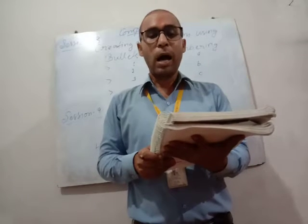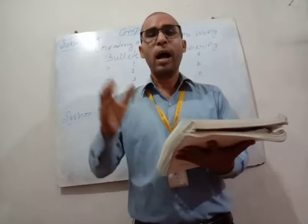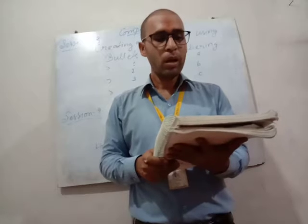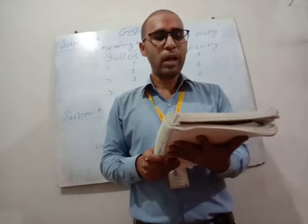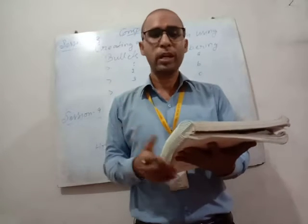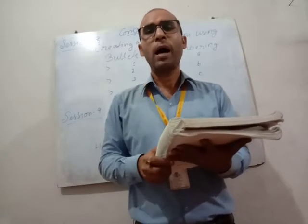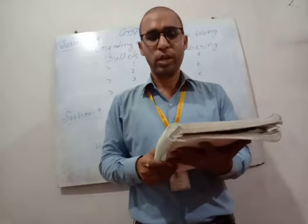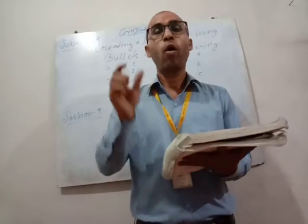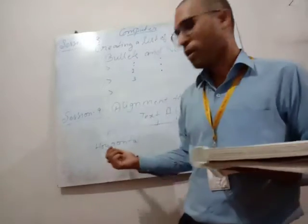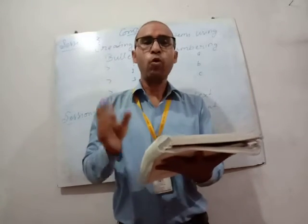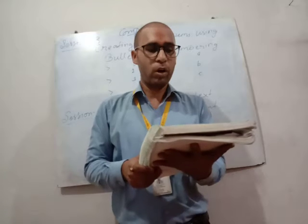You should set the alignment before you start typing. You can also select an entire document and then change the alignment of the text, or you can change the alignment of particular text. There are two categories of alignment: the first is horizontal, and the second is vertical. Both alignments are available in Word document.